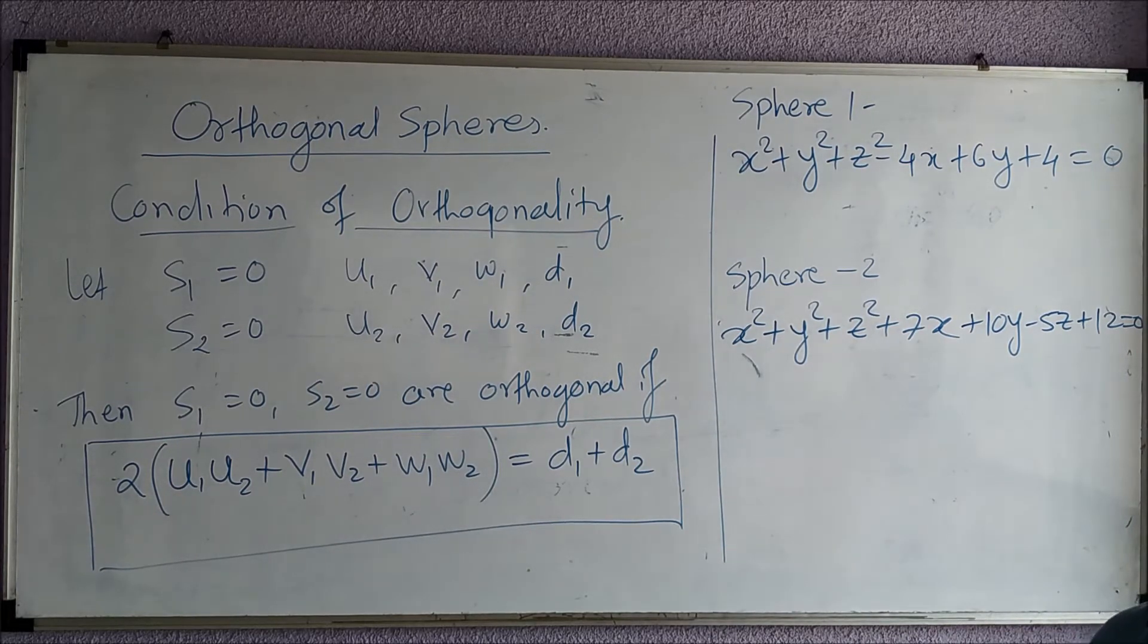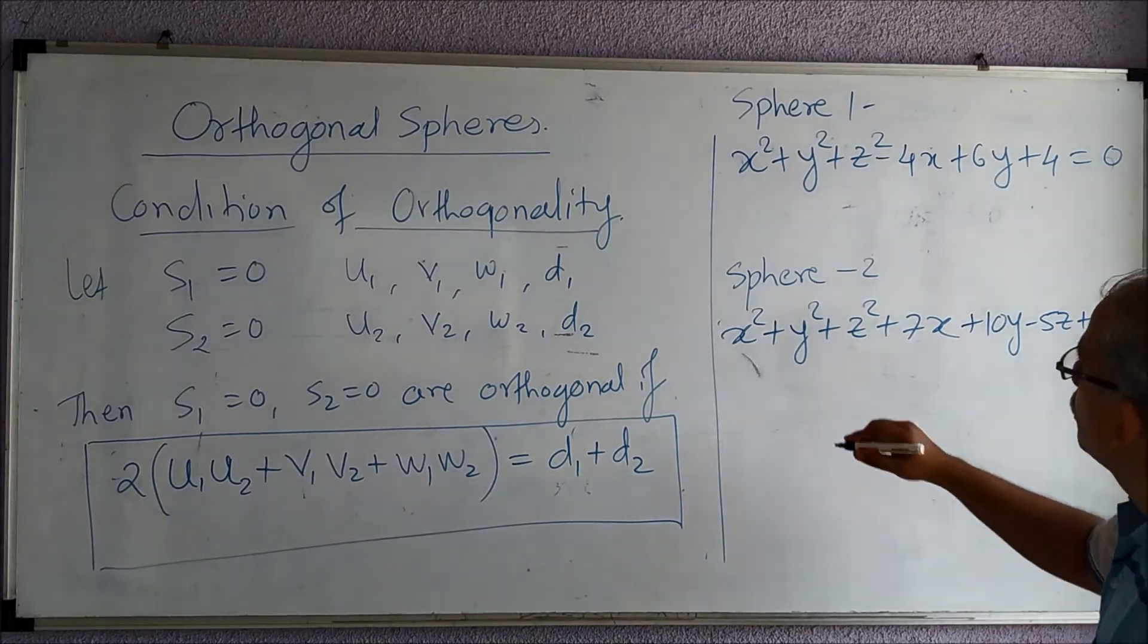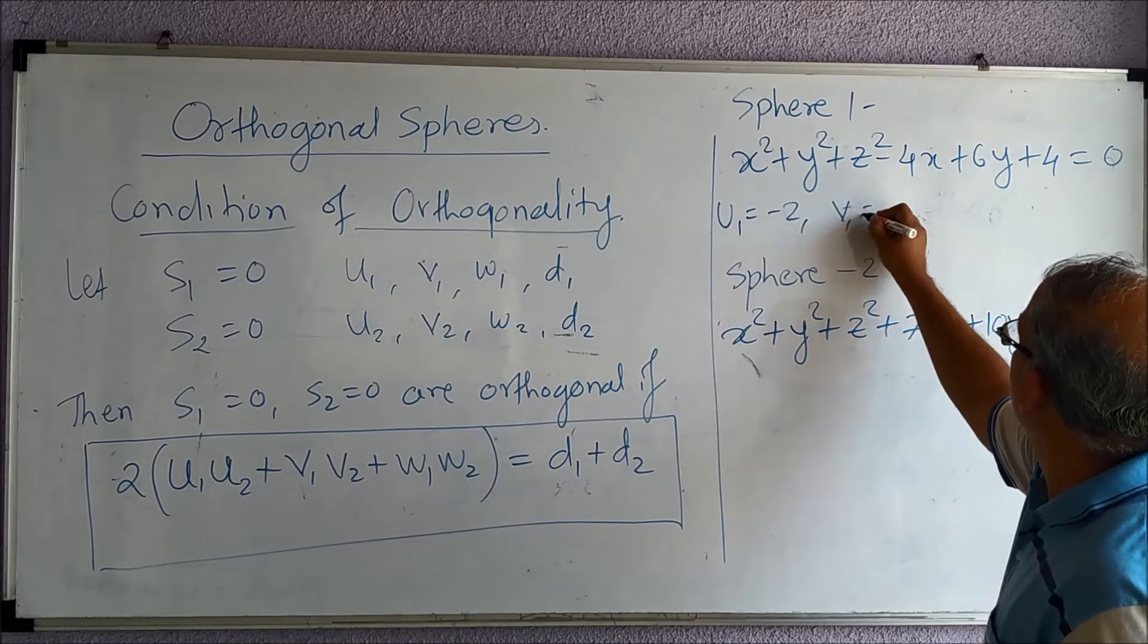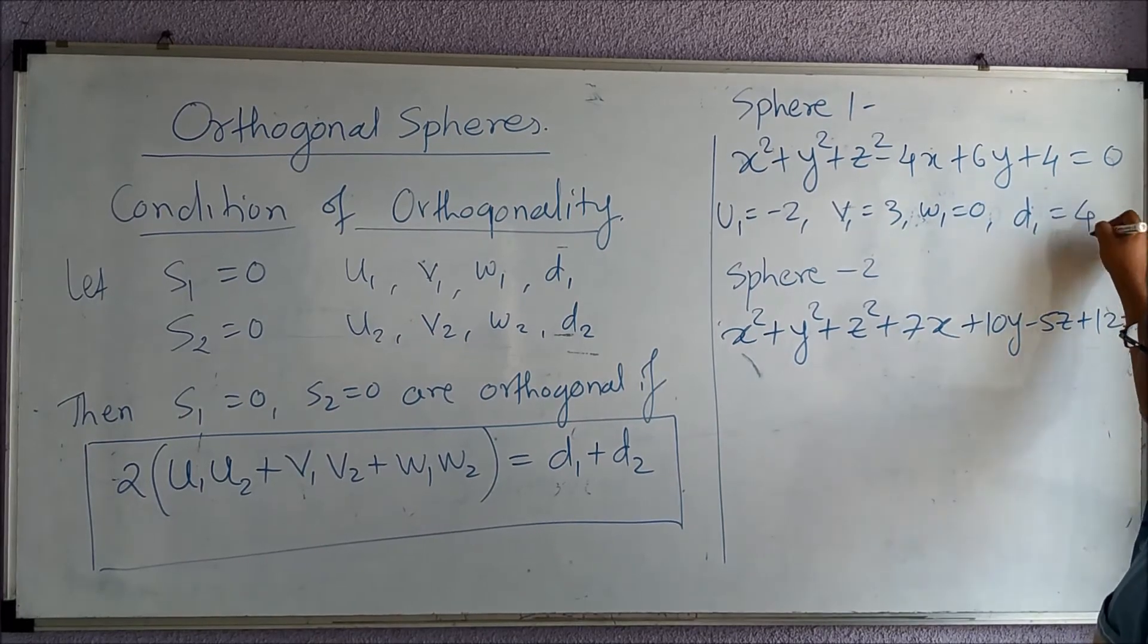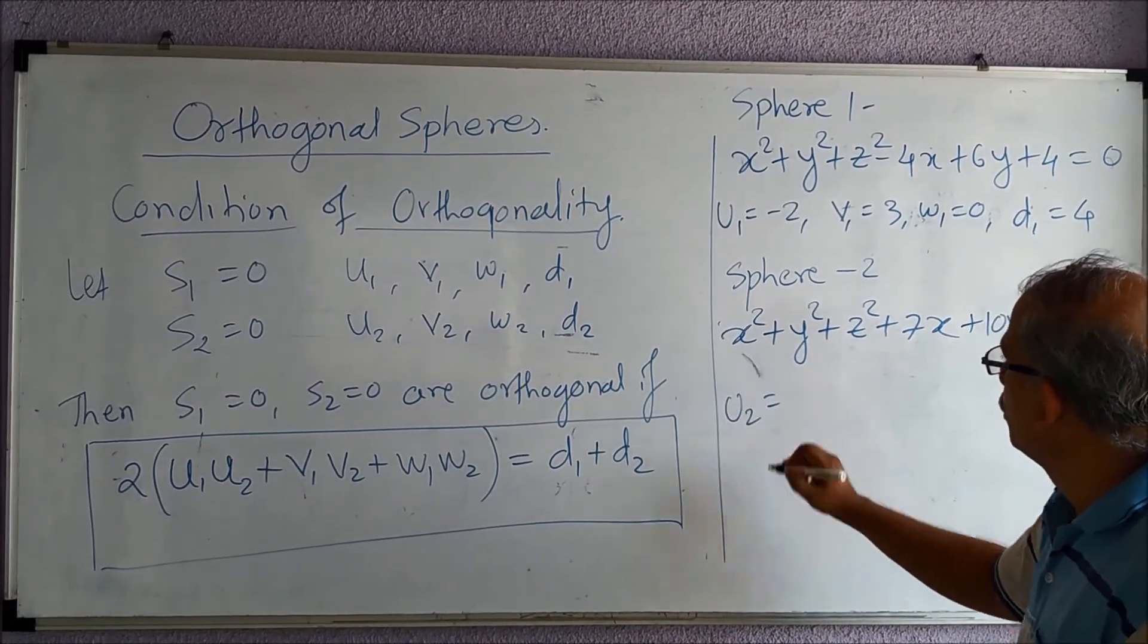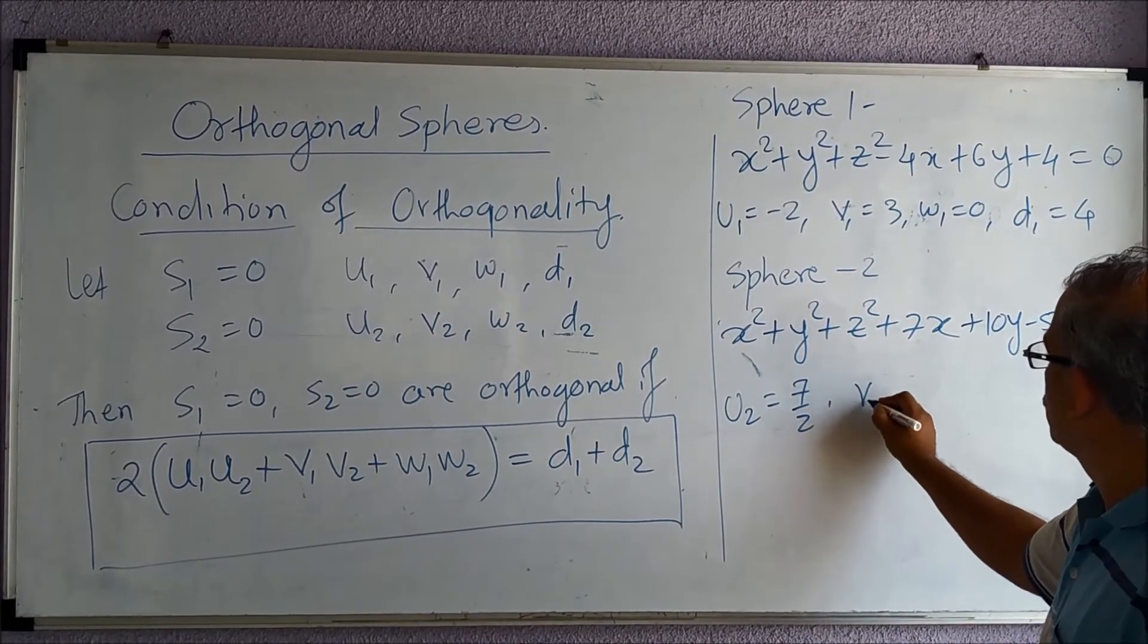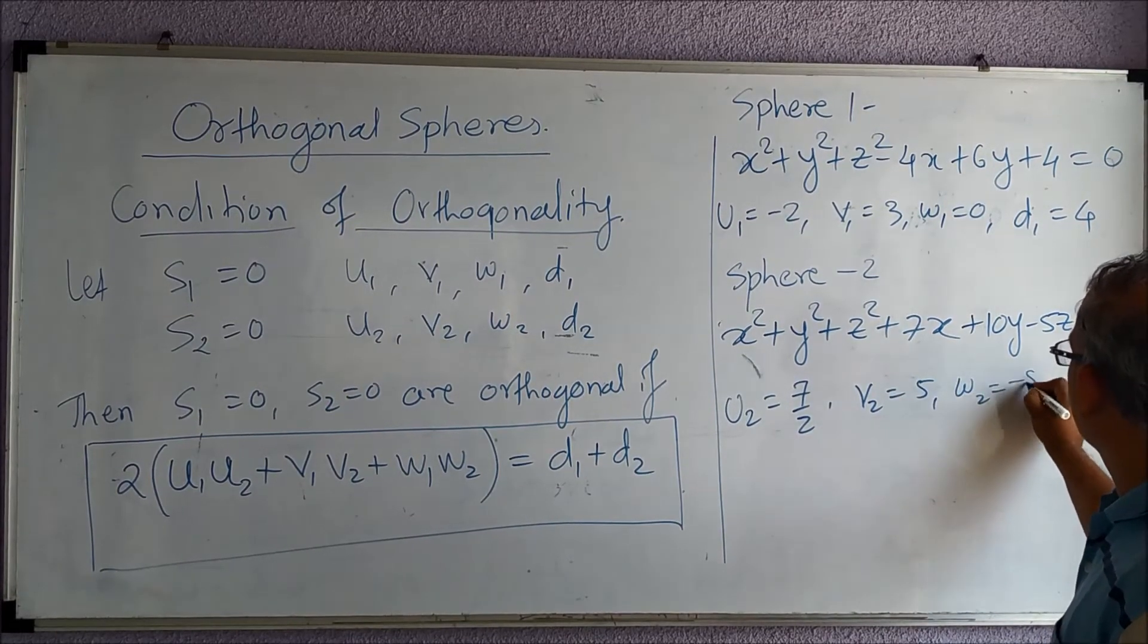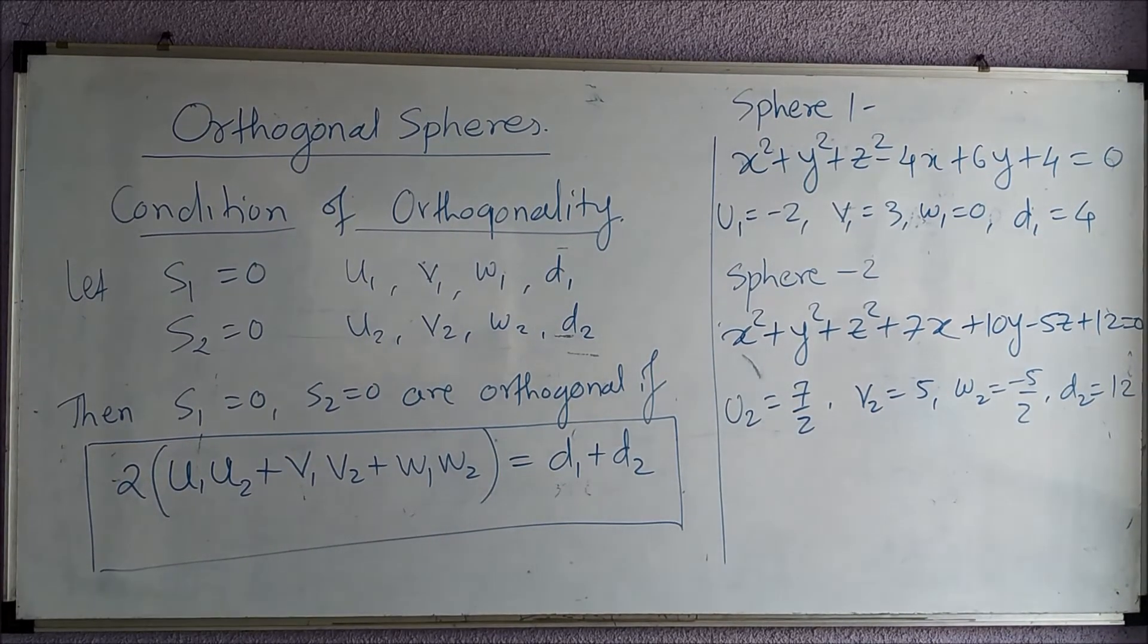Now for these two spheres, first of all we will calculate u1, u2, v1, v2, etc. Here u1 = -2, v1 = 3, w1 = 0, and d1 = 4. And here u2 = 7/2, v2 = 5, w2 = -5/2, and d2 = 12.